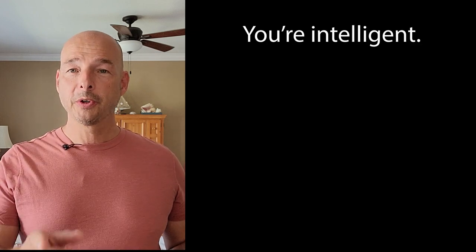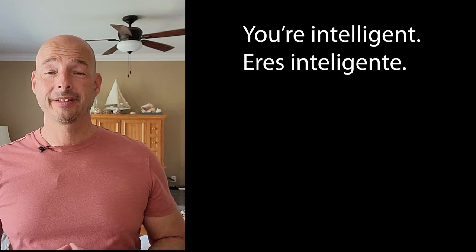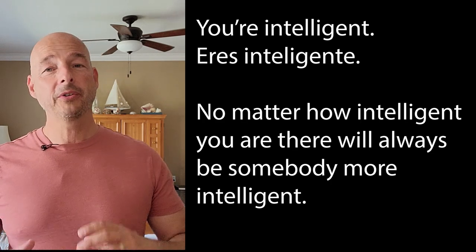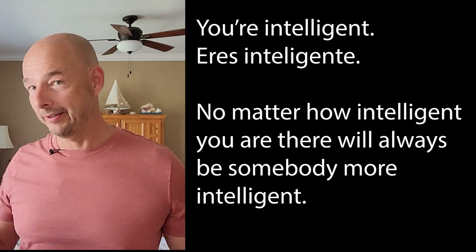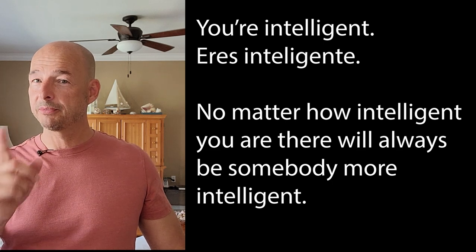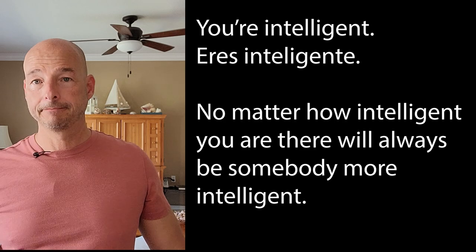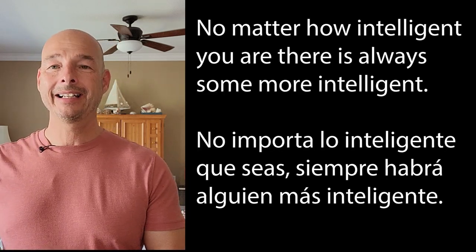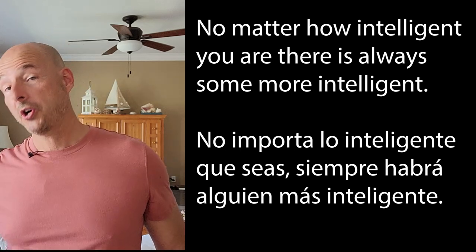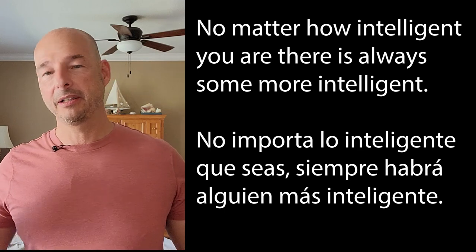Here's your simple phrase to play with: you're intelligent — eres inteligente. We're going to be plugging it in, and I'm actually going to give you a full sentence this time: 'No matter how intelligent you are, there will always be somebody more intelligent.' I really only care if you can translate that first part of the phrase, but for you folks that want a complete sentence, there you go. Maybe with the conjugation of the present subjunctive if you haven't learned those — but it's very close to something you've already heard because we're using the verb ser. No importa lo inteligente que seas, siempre habrá alguien más inteligente.